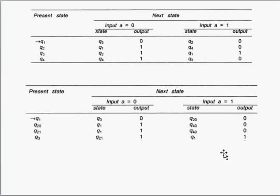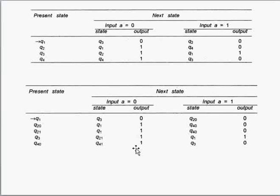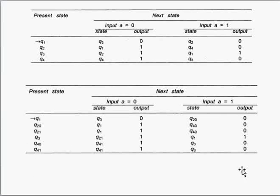Now we come to q4, which we have already split into q4_0 and q4_1. First we define q4_0: if we apply 0 over q4 we get q4 with output 1, so that is q4_1 with output 1. If we apply 1 over q4 we get q3 with output 0, so that is q3 with output 0. Once q4_0 is defined, q4_1 is just a duplicate of q4_0 with the present state changed to q4_1.